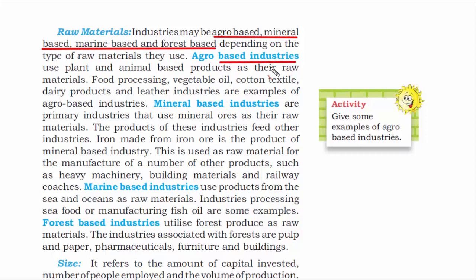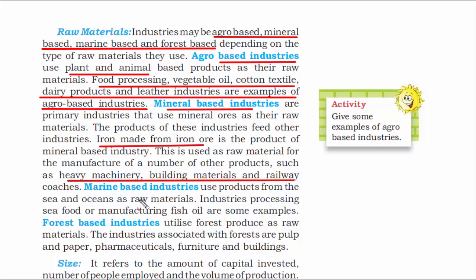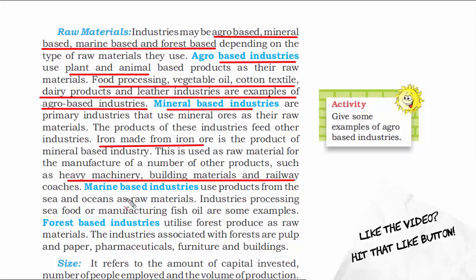If you see agro — agriculture — everything has to deal with plants and animals. The second is mineral-based industries. When we say minerals, they deal with iron made from iron ore and other sorts of minerals used for manufacturing heavy machinery, buildings, materials, and railway industries.